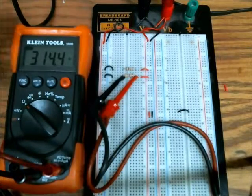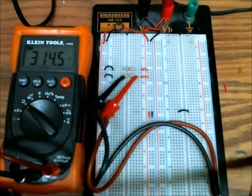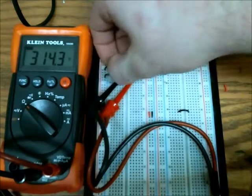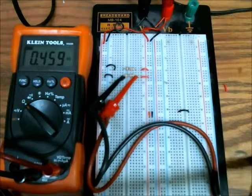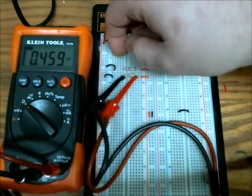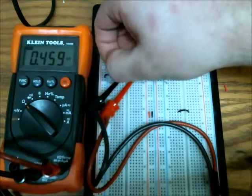Now it's a little off, and that's probably due to the tolerance of the resistors. So let me just check that real quick. So this is a 470 ohm resistor and it's measuring 460, so that would explain part of it.